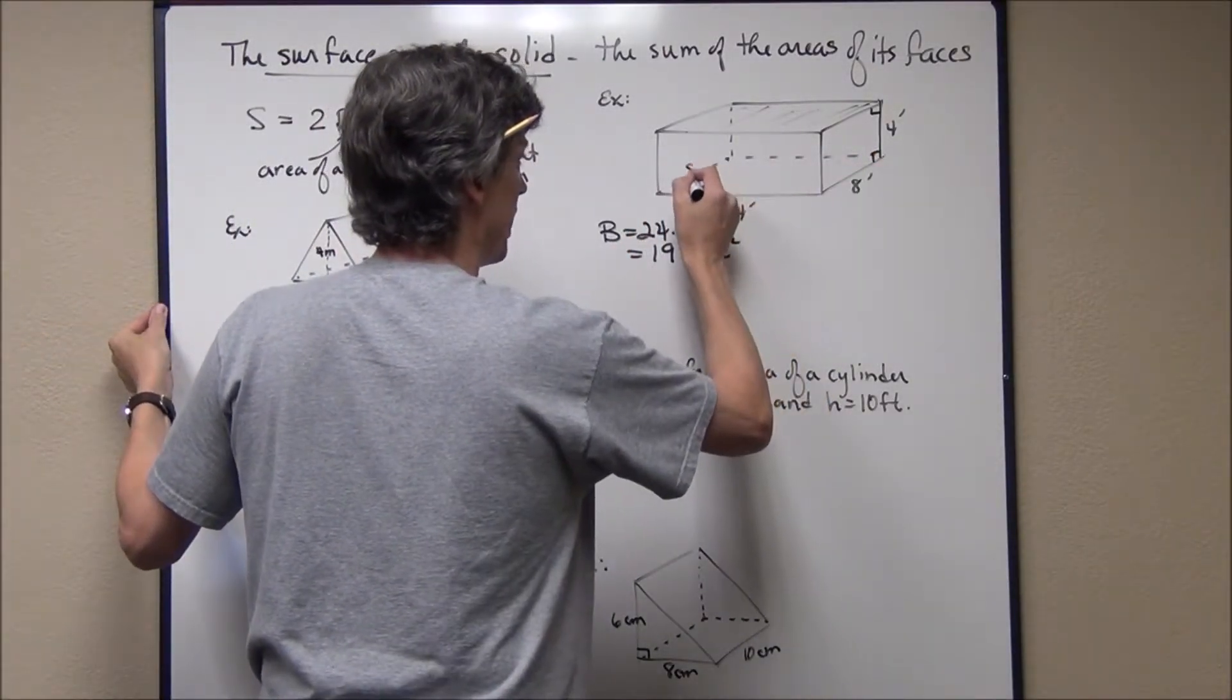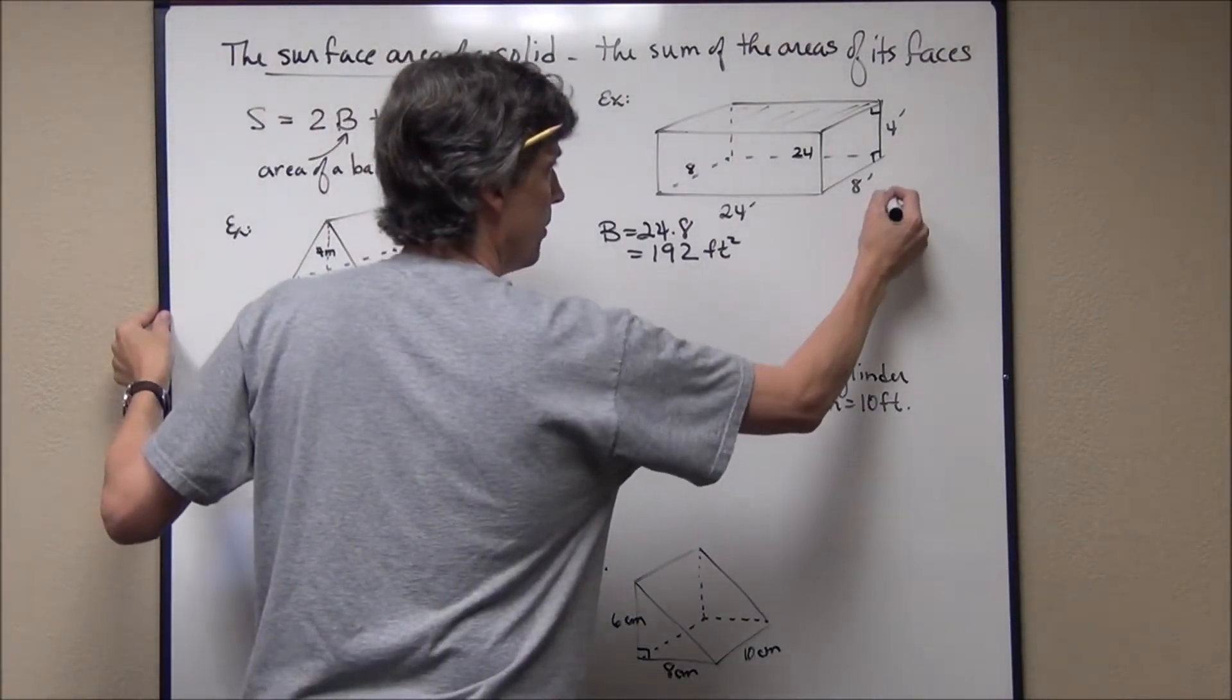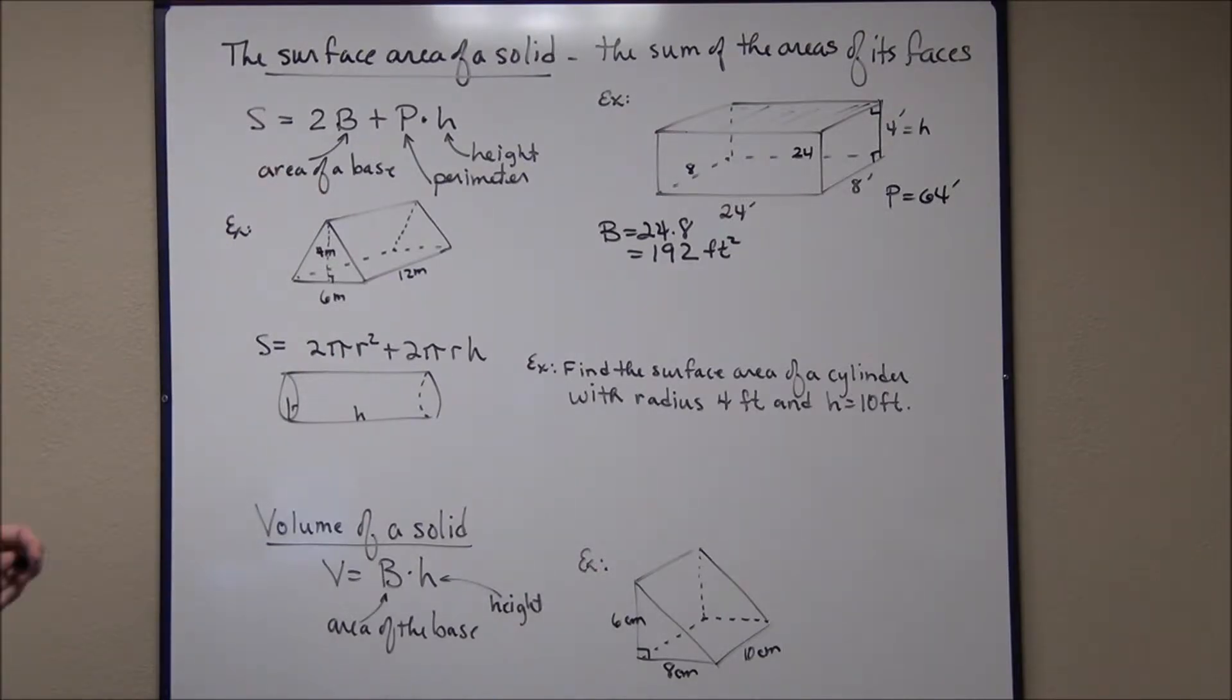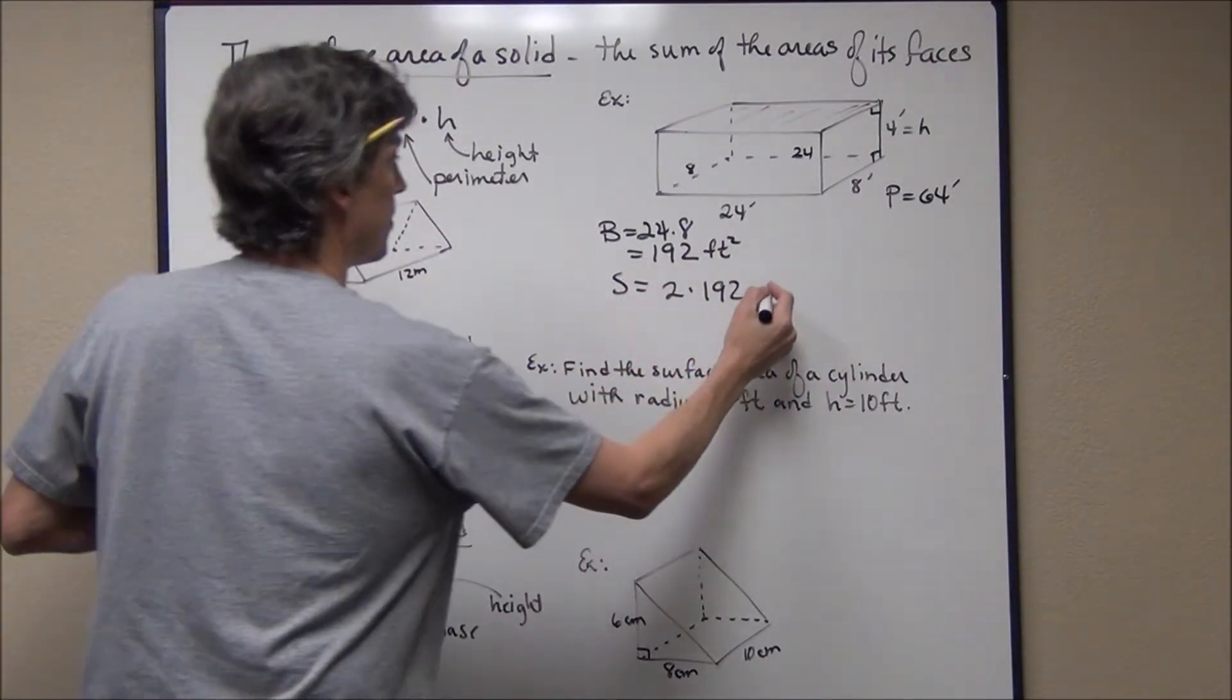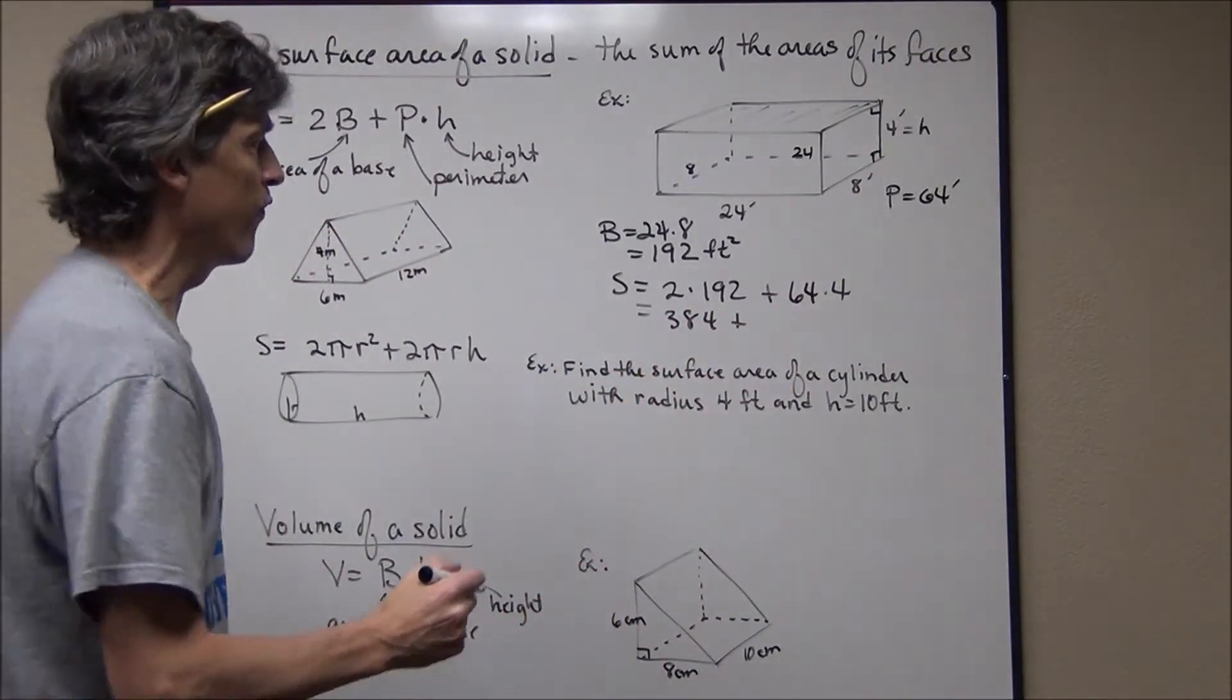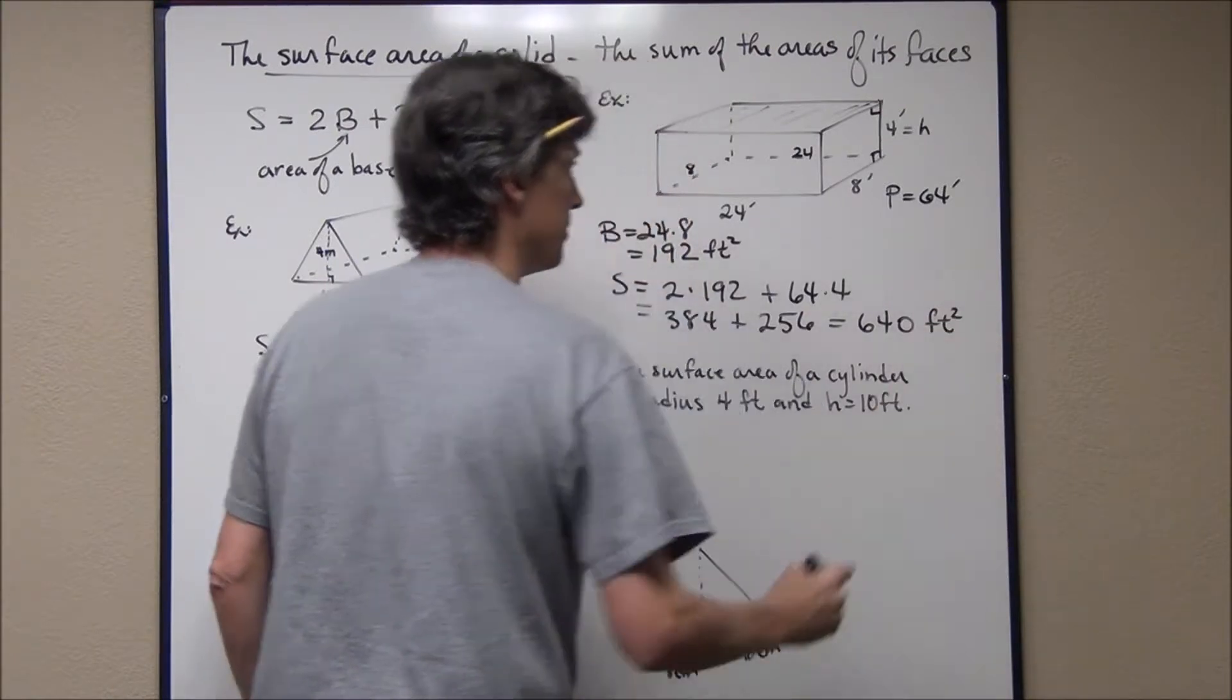And then the perimeter. The perimeter of my base, this is 24 this way, 8 this way, so this is 8 over here and 24 over here. If you add that all the way around, 24 plus 8, plus 24 plus 8, that would be 48 and 16, 64. So the perimeter is 64 feet. And of course the height, I've already mentioned, that's going to be this distance right here. The height is going to be 4 feet because I have the top and the bottom as my bases. So the surface area is equal to 2 times 192 plus the perimeter, which is 64, times the height, which is 4. So 2 times 192, that's 384. And 64 times 4 is 256. And if I add those together, that's 640. And this is going to be square feet. That's going to be in square feet. And that's my surface area.